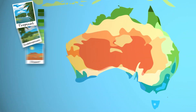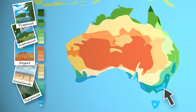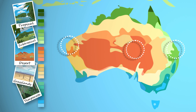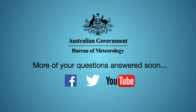The Great Dividing Range, for example, helps the temperate zone reach up along the east coast of New South Wales. Our red centre is mainly classified as desert, while coastal regions at a similar latitude are considered subtropical or grassland. Australia is one of only a few countries that spans multiple climate zones, so be sure to make the most of it.